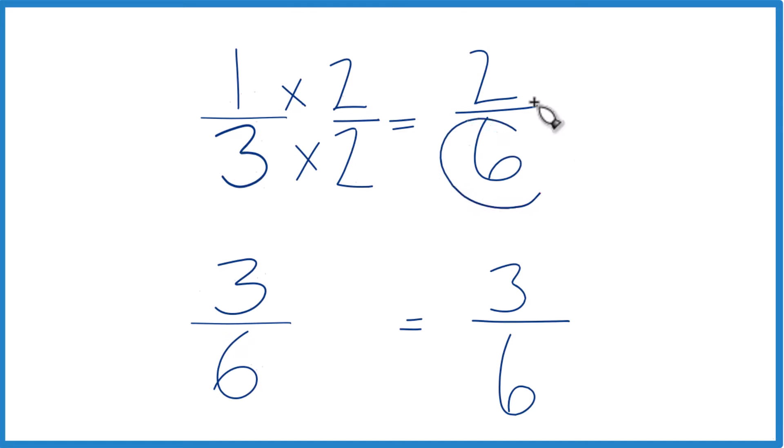But now we have a denominator of six for both of these, we're just going to compare the numerators. Three is greater than two, three-sixths, that's greater than two-sixths, by one-sixth, but it's greater.